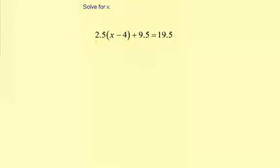Solve for x. We have 2.5 times the quantity of x minus 4 plus 9.5 equals 19.5. Since there are a lot of decimals here, I'm going to use the calculator to help as we go through this process.